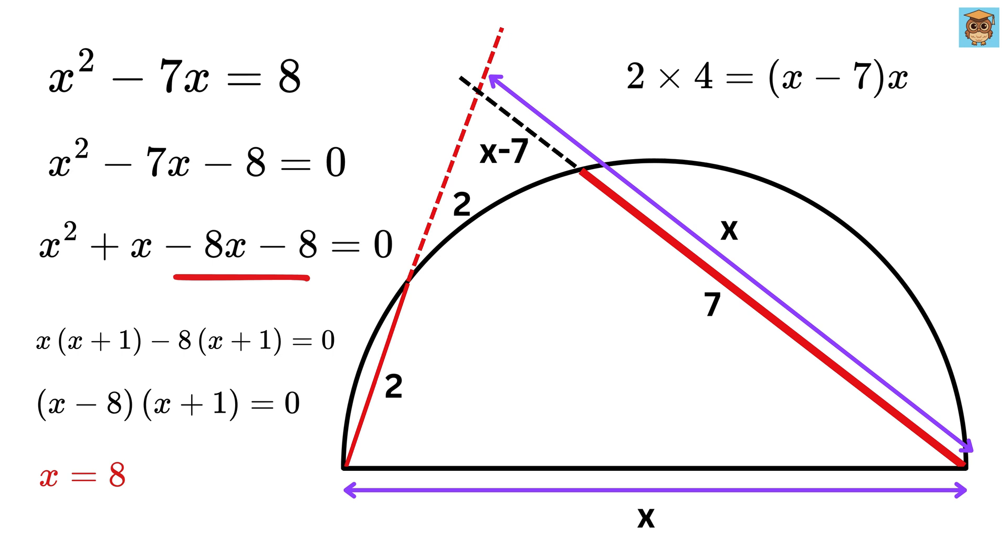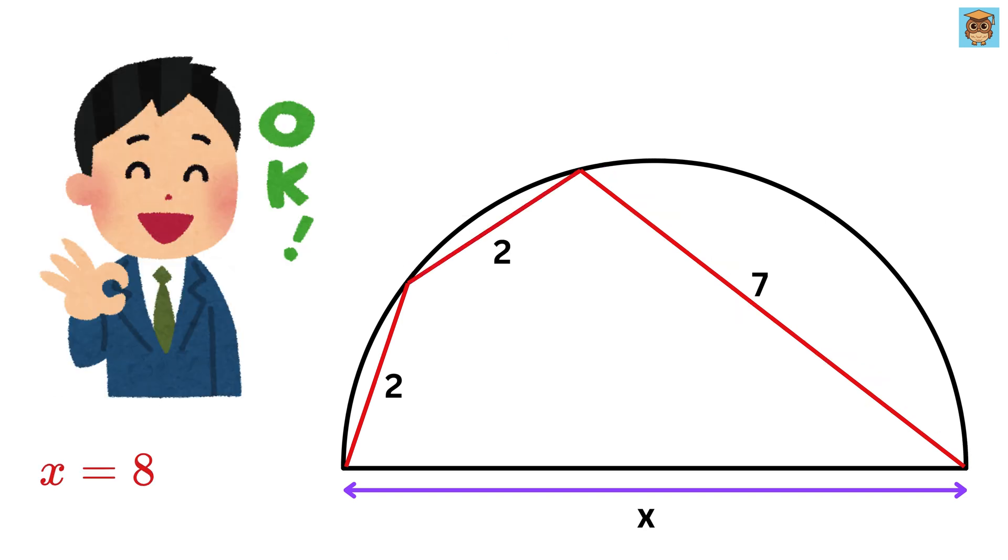Thus we get X equals 8, or X equals negative 1. But obviously length cannot be negative, and hence we discard this to get X equals 8. This is our final answer. This was such an amazing question, as we were able to learn and apply so many concepts in this single video.